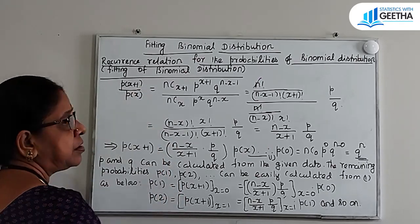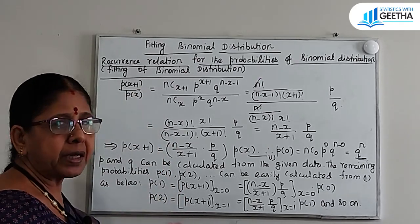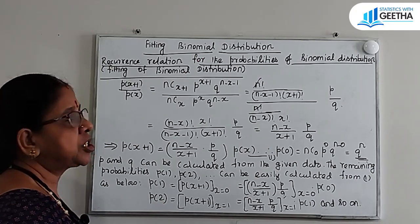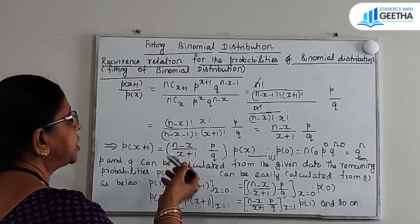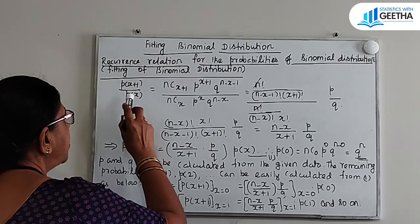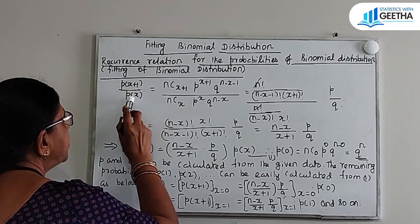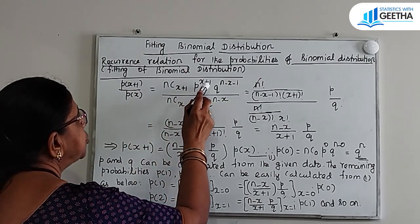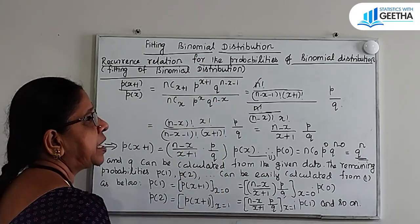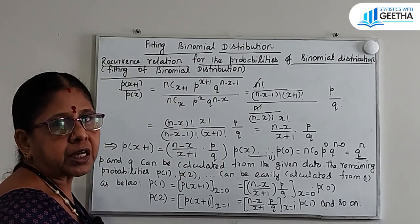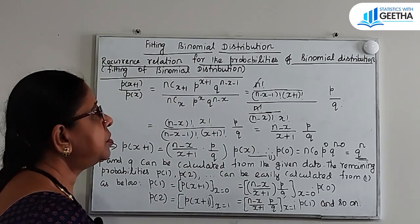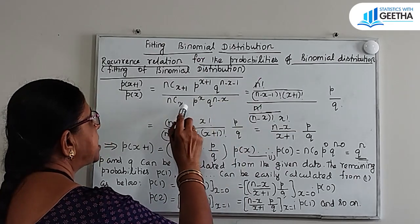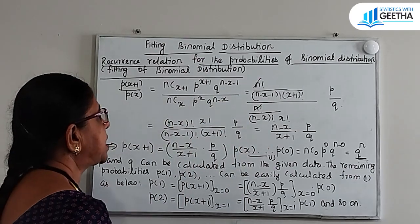P(x+1) — using the binomial probability distribution — P(x+1) by P(x) is equal to nC(x+1) into p^(x+1) into q^(n−x−1), divided by nC(x) into p^x into q^(n−x).